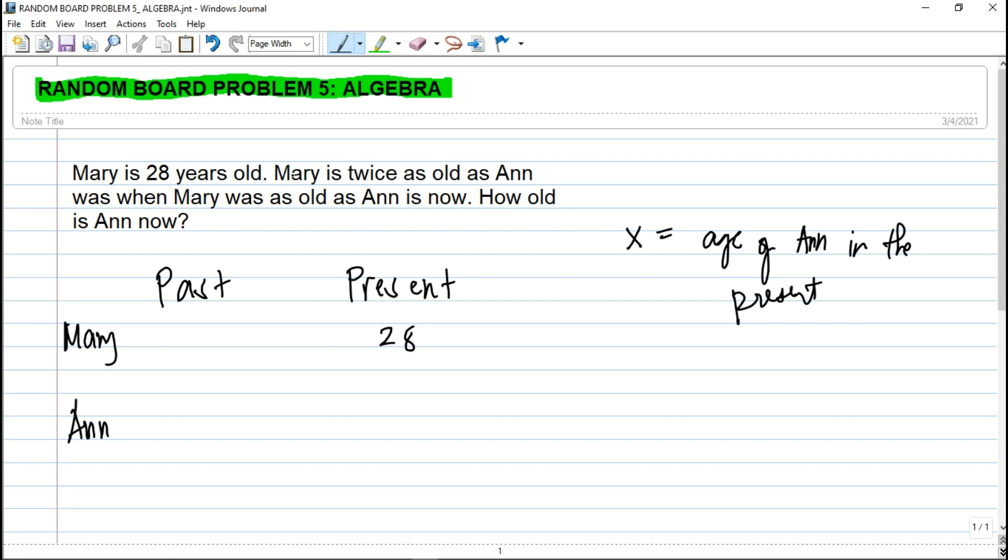Let's go to the second statement. Mary is twice as old as Ann was. So what this means guys is that Mary's age in the present is two times more than Ann's age in the past, because this is 'was'.